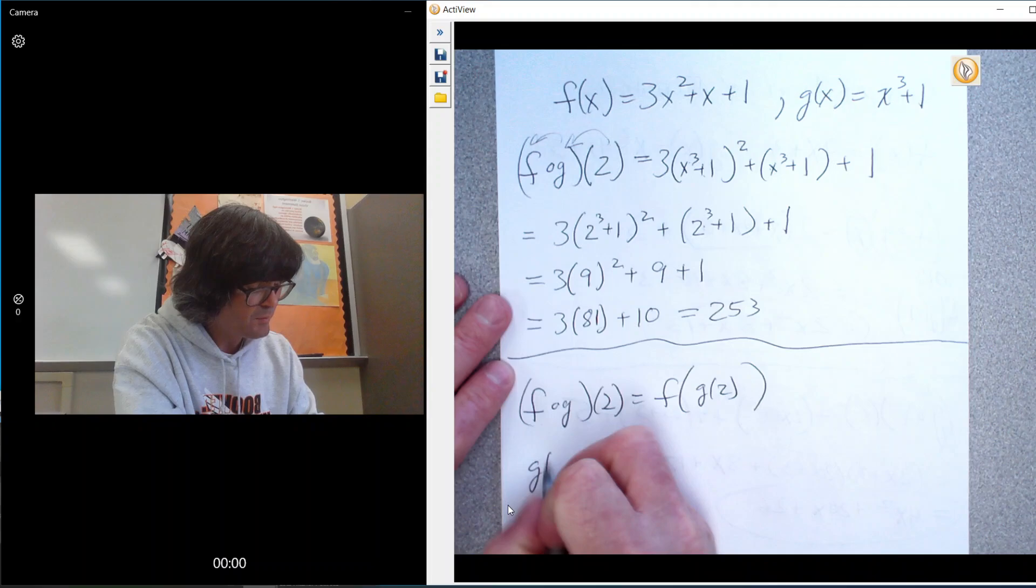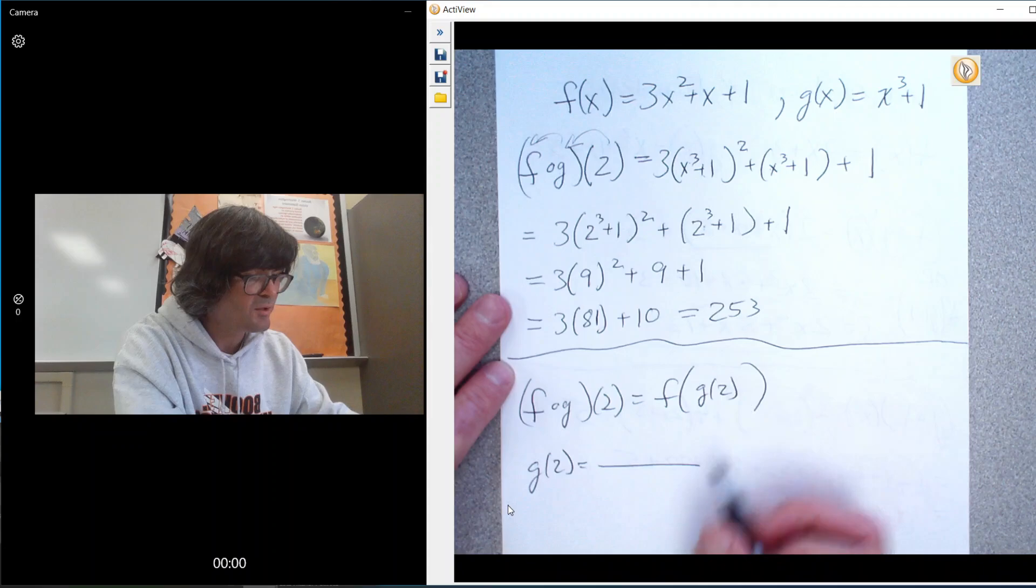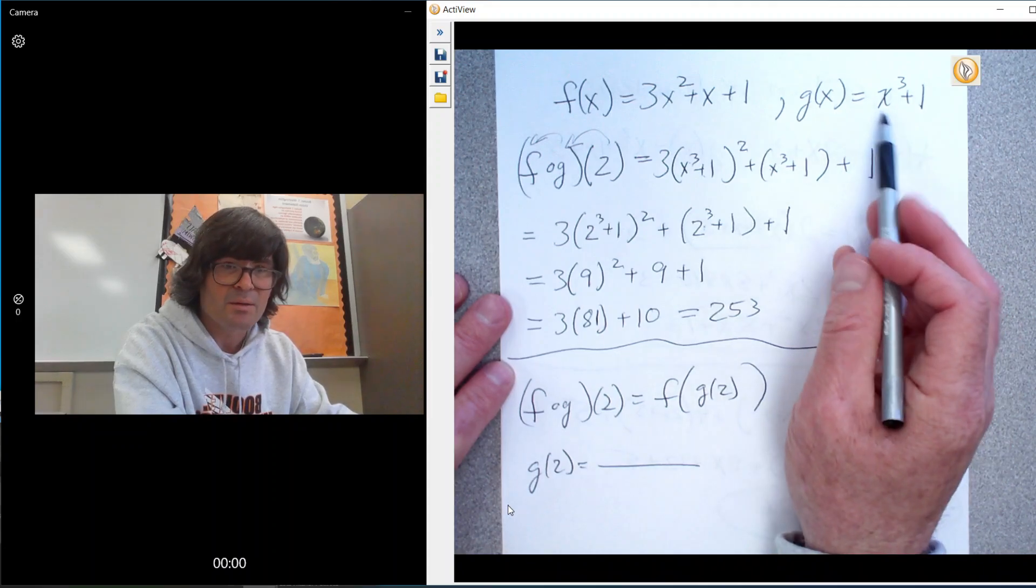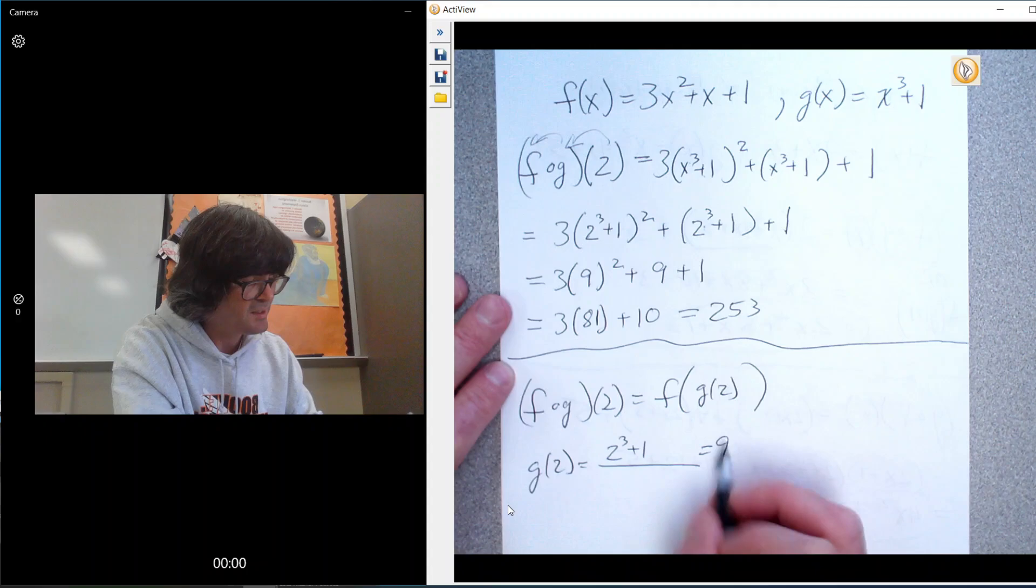So what is g of 2? What is g of 2? Well, here's g. You're going to put 2 in there. So you get 2 cubed plus 1. g of 2 is 9.